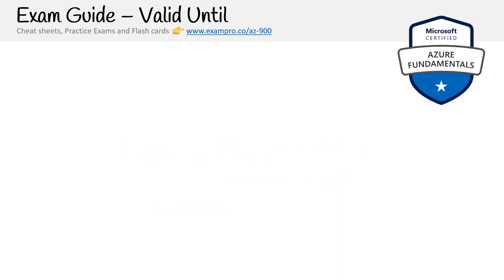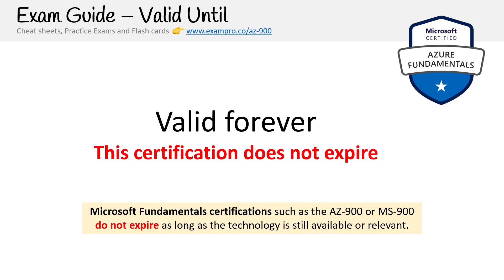These certifications from Microsoft are valid forever — specifically for fundamental certifications. Any certification with 900 in the name, such as AZ-900, DP-900, AI-900, SC-900, PL-900, or MS-900, does not expire. For other levels like associate and expert, I think it's two to three years. But interestingly, to get recertified you don't have to pay to retake the full exam — you can take a simpler test to confirm your knowledge is up to date, and I believe it's free. That's a great advantage Microsoft offers at the associate, expert, and specialty levels.